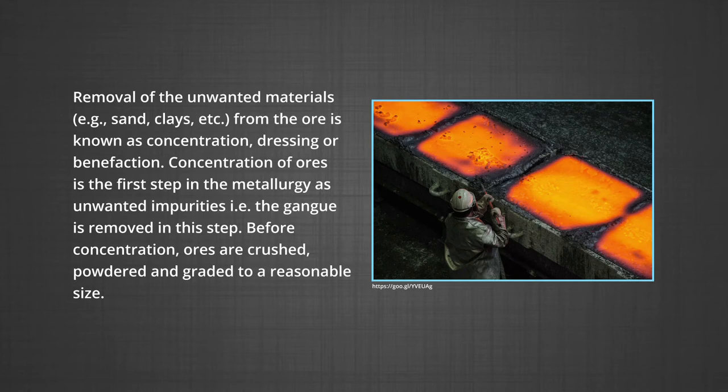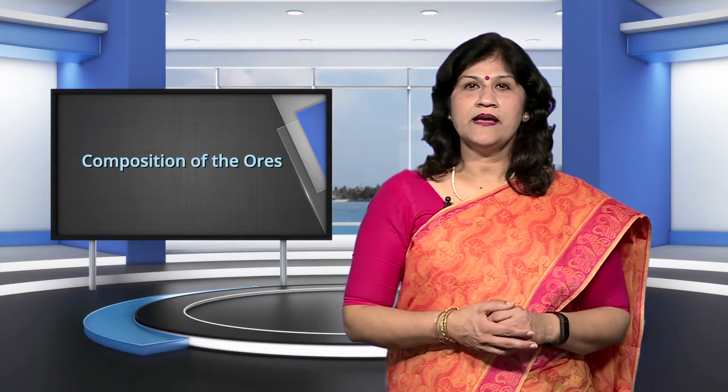Now that we know about ores of metals, let us understand the processes involved in metallurgy. The first one is removal of unwanted materials such as sand, clay, etc. This is known as concentration, dressing, or beneficiation. Concentration of the ore is the first step in metallurgy, as the unwanted impurities, that is gangue, are removed in this step. Before concentration, the ores are crushed, powdered, and graded to a reasonable size. It involves several steps and selection depends upon differences in physical or chemical properties of the metal compound and that of the gangue.